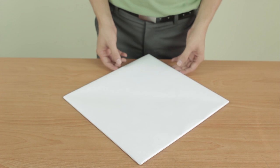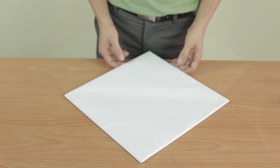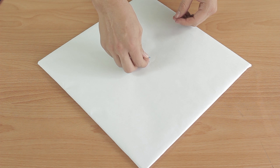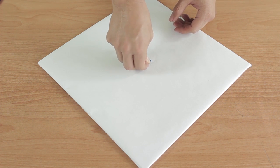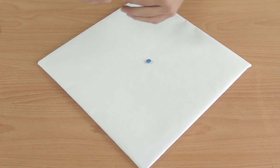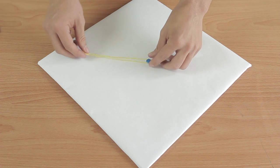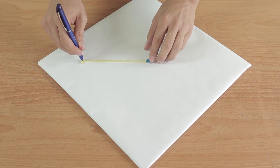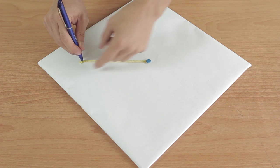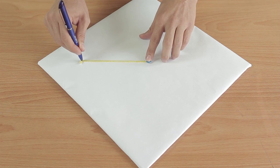Para dibujar una circunferencia, se utilizará un método basado en la definición de esta misma. Se coloca una tachuela en el lugar que se desea que esté el centro. El cordel debe medir lo mismo que el radio. Con el cordel tenso, se mueve el lapicero o lápiz hasta rodear por completo la tachuela.